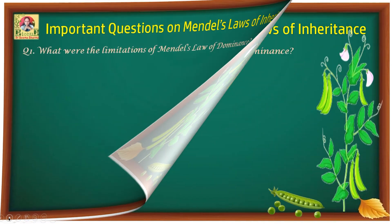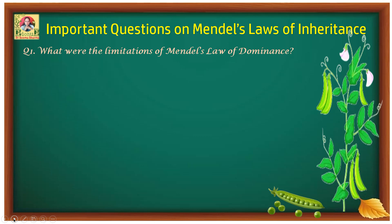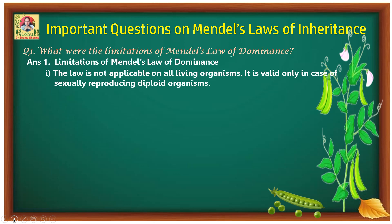Starting with the first question: what were the limitations of Mendel's law of dominance? Mendel's first law of inheritance is called the law of dominance and it is applicable to most living organisms, but this law has certain limitations. This law is not applicable to all living organisms — it is valid only in case of sexually reproducing diploid organisms.